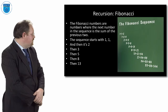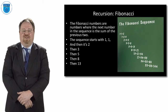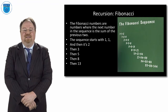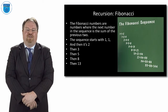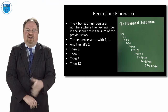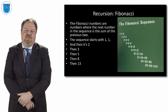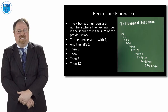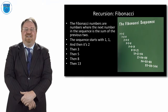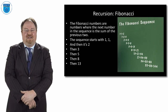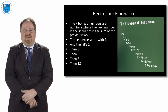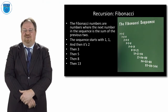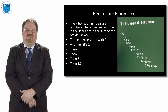The Fibonacci number sequence, which we'll know from the Da Vinci Code and other places, is 1, 1, 2, 3, 5, 8, 13, etc. I was reading an interesting article recently which said if you need to convert miles to kilometers, the Fibonacci number sequence is a handy way of doing it.